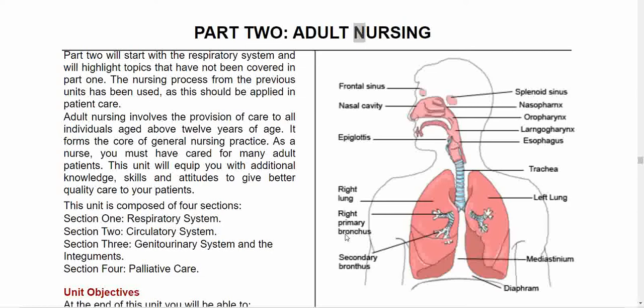Adult nursing involves the provision of care to all individuals aged above 12 years of age. It forms the core of general nursing practice. This unit will equip you with additional knowledge, skills, and attitudes to give better quality care to your patients. The unit covers: Section 1 - respiratory system, Section 2 - circulatory system, Section 3 - genital urinary system, Section 4 - integuments, and a final section on palliative care.